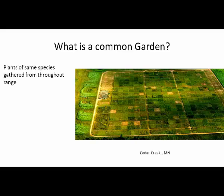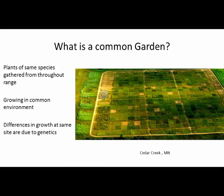A common garden is an area where you take plants of the same species gathered from throughout the species' range and plant them in a common environment — the same place — with the idea that any differences in growth you observe are due to genetic differences among those plants, since we assume they're growing under the same conditions.